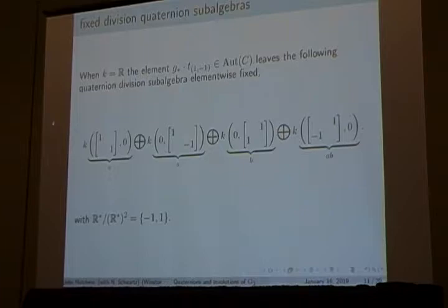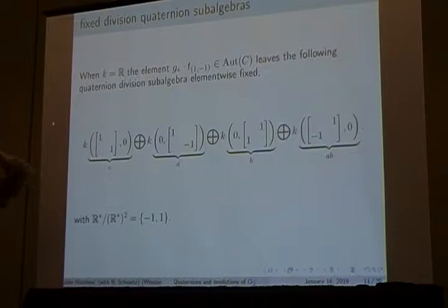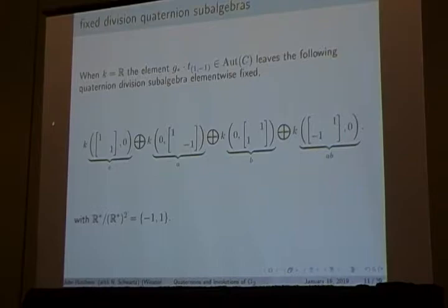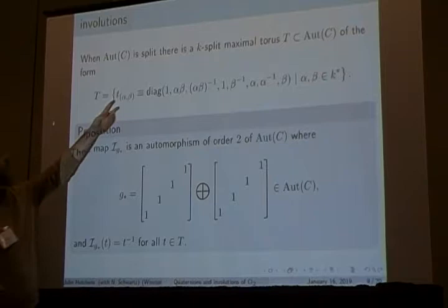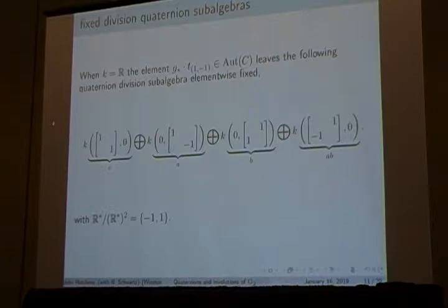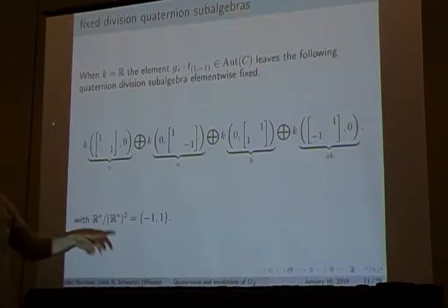Over certain fields we're going to get division algebras. In the real case — a nice safe field — this is a division algebra; it's a subalgebra of the original octonion algebra. It's fixed by the element G-star, our original element times the torus. We're plugging in negative one for alpha and beta and taking a multiple of the original element. That fixes a division quaternion algebra — and that's how we know this fixes a new class. Notice that all the alpha and beta inputs are coming from the square classes of the field. Having more square classes allows for more division algebras, which allows for more involutions and more symmetric spaces.